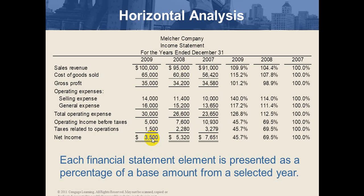Similarly, net income after tax is 70% of operating income before tax. So dividing 3,500 by the base year net income gives the same percentage of 45.7% in 2009, and dividing the 2008 net income by the base year gives 69.5%. Therefore, operating income before tax, tax, and net income after tax should all show the same percentage. This is a key check point: if these three numbers differ in your calculation, something is wrong.